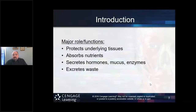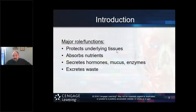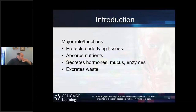Major roles and functions of tissues: they help protect underlying tissues, structures, and organs. They'll absorb nutrients, and they have certain structures that allow for this. They'll also secrete different types of secretions — hormones, mucus, enzymes — and excrete waste products.